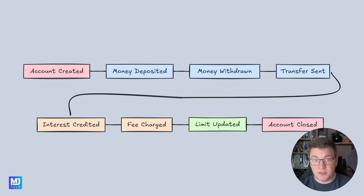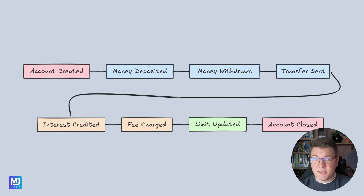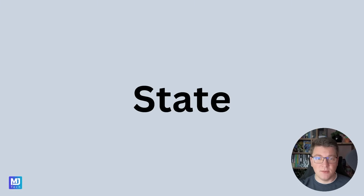Event sourcing is about describing the changes that occur in your domain as immutable facts called events. These events carry business intent and the required data to describe a given event. Each event will have a unique account identifier and specific data relevant to that event. Notice that at no point are we storing the complete state of a bank account — we are just storing the individual changes that occur on the overall aggregate. This brings us to our next concept: state. How do we actually determine what is the state of our aggregate, so that we can decide if we are allowed to perform another operation or not?